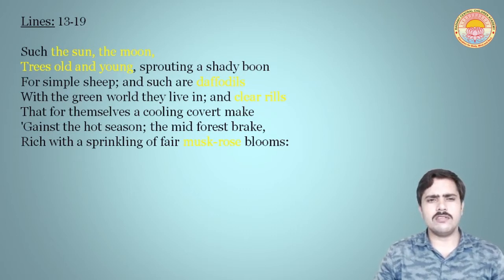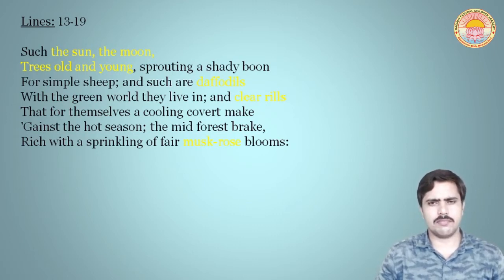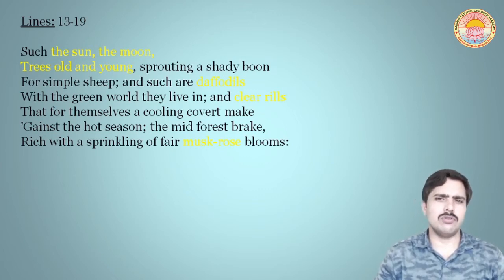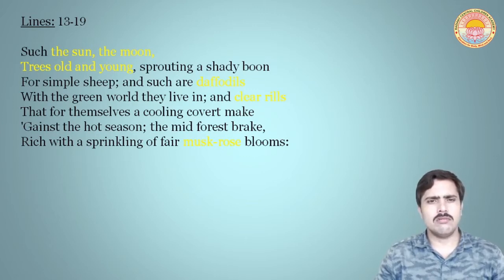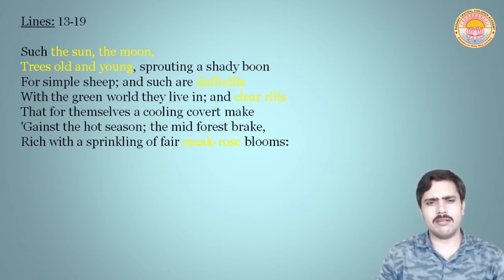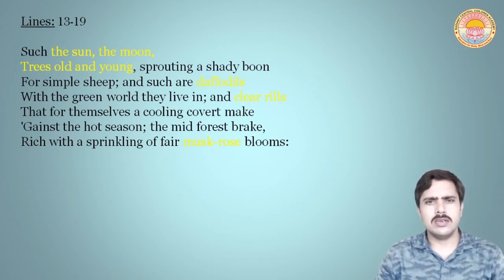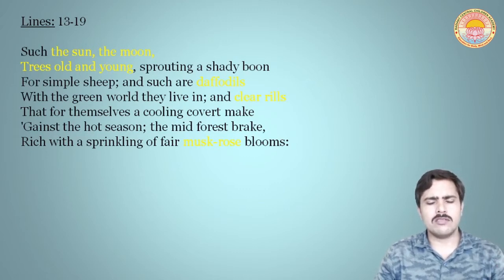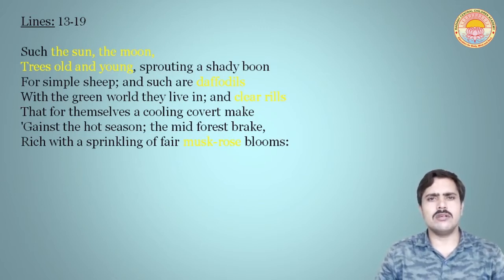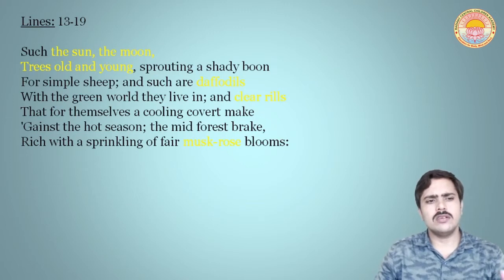In the first point, as you are seeing here: 'Such the sun, the moon, trees old and young.' All these things are natural — the sun, the moon, the trees whether they are old or young. They are all providing — sprouting — a shady boon for simple sheep. Here 'sheep' refers to, in Christian religion, a symbol of holiness. We can compare this to humans also. So all these things are providing a shady boon for simple sheep.